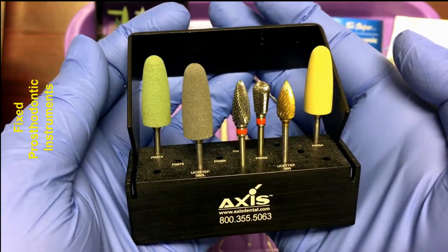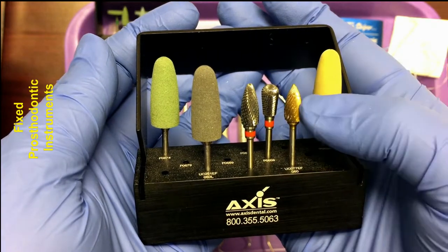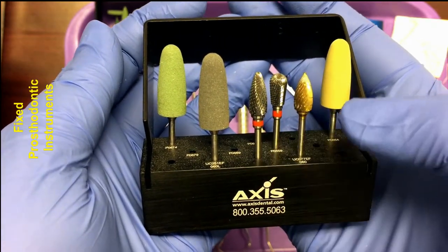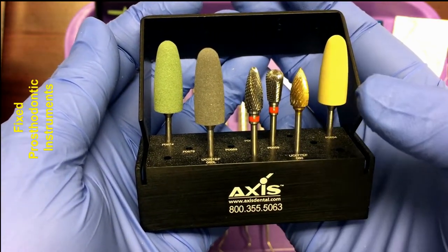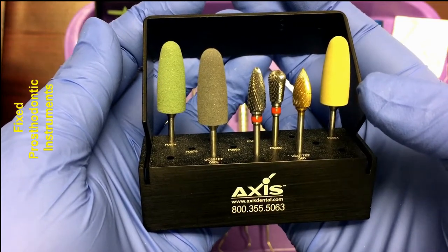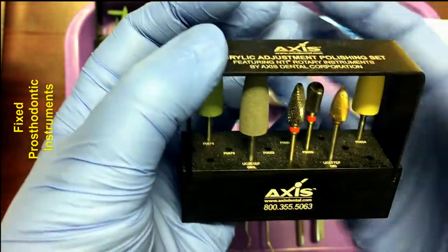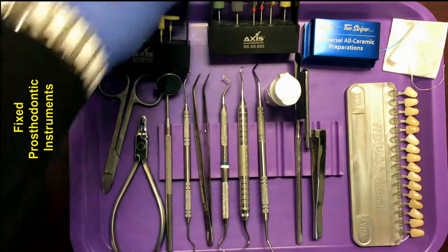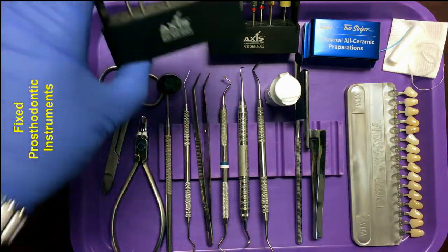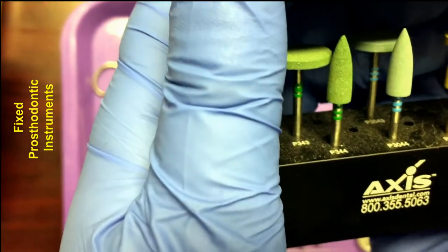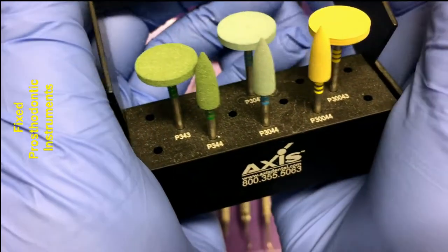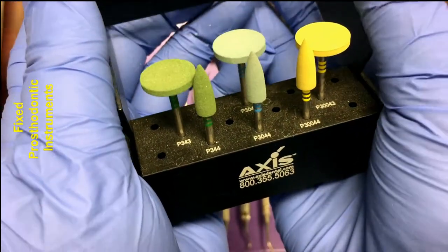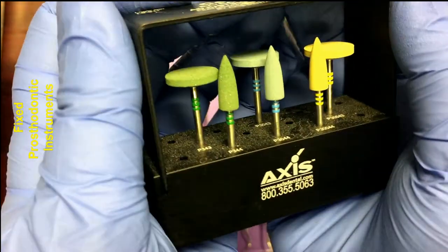A next set of burrs that may be used or will be used during the final restoration on the cementation tray are finishing burrs. These happen to be for finishing porcelain. The finishing burrs are made specifically to finish the material that the crown or bridge is made out of. They may be porcelain, ceramic, or used for precious metals like gold.